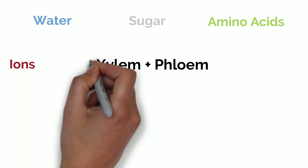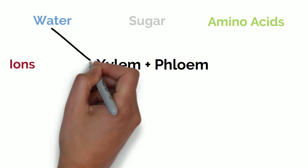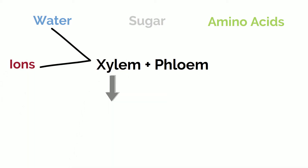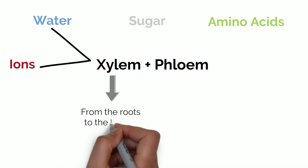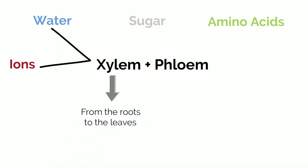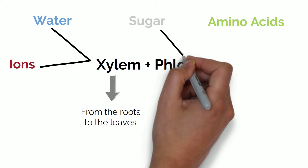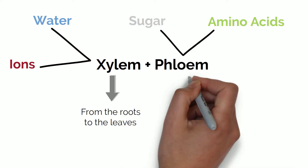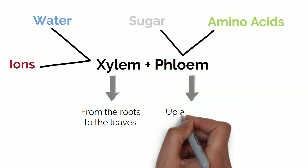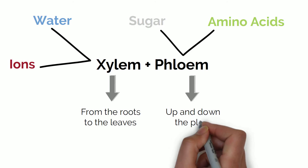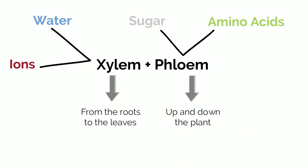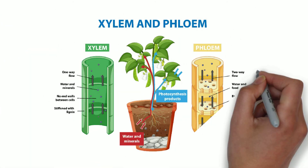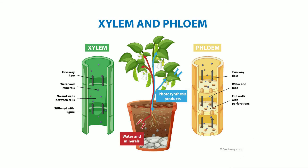The xylem tissue transports water and mineral ions up against gravity from the roots and into the leaves of the plant. The phloem tissue transports organic substances like sugars and dissolved amino acids up and down the plant. Both tissue types are made up of highly specialised cells arranged in a way which helps give the plant as much strength and structure as possible.